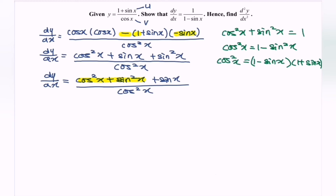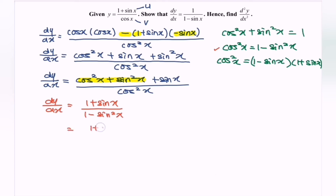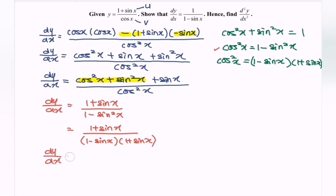Substituting the situation, we have dy/dx = (1 + sin x) / cos squared x, where cos squared x equals (1 − sin x)(1 + sin x). Factorizing, dy/dx = (1 + sin x) / [(1 − sin x)(1 + sin x)]. There is a common term, so we simplify, and finally we can show that dy/dx = 1 / (1 − sin x).